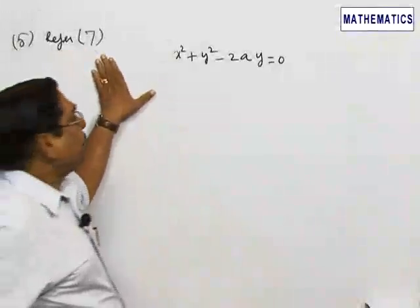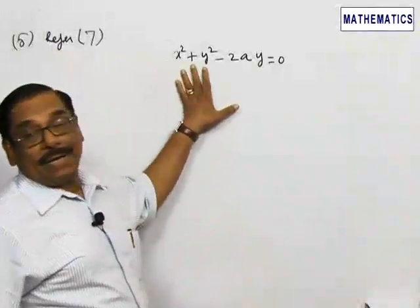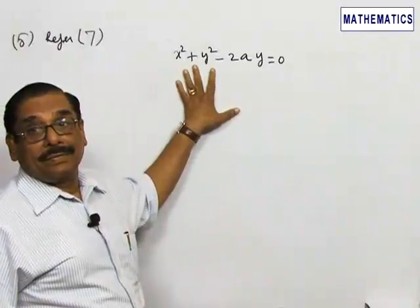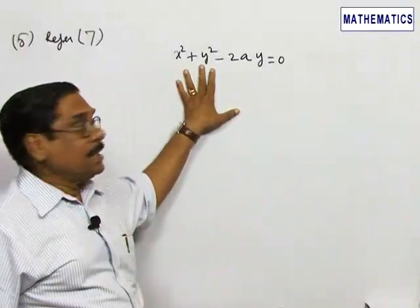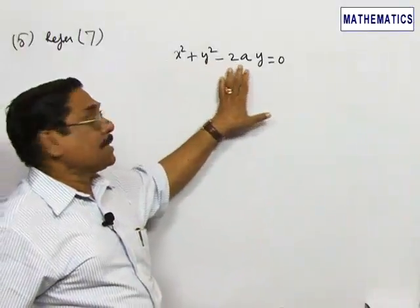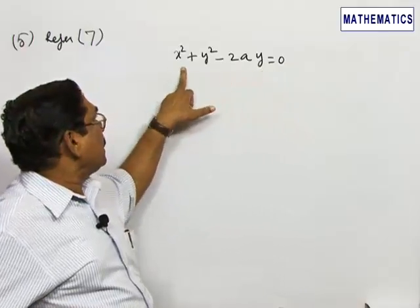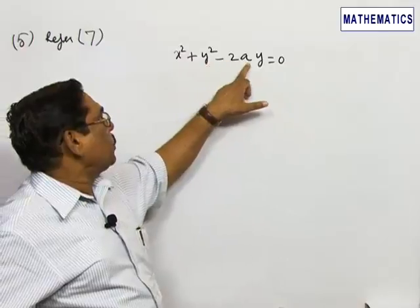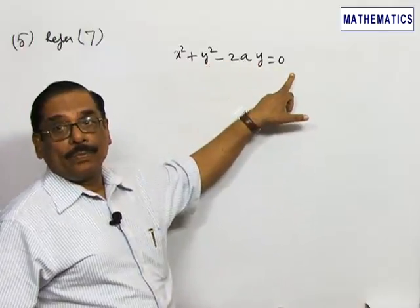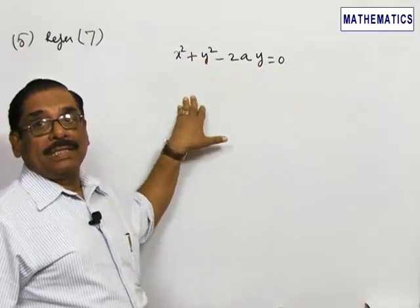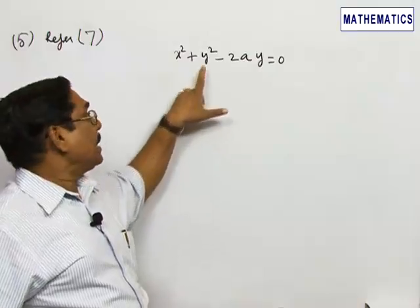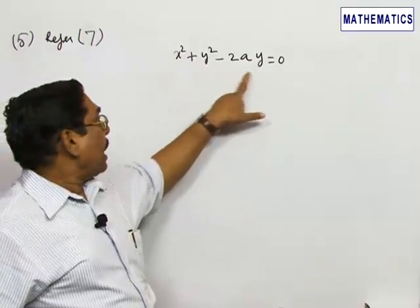Refer question number 7. You are given the set of circles passing through the origin and having the centers on the y-axis. So the general equation can be written as x squared plus y squared minus 2ay equal to 0. You are asked to frame the differential equation of this system of circles.